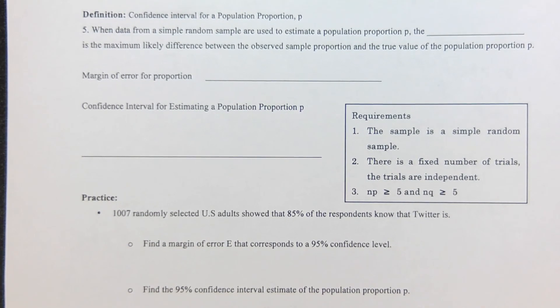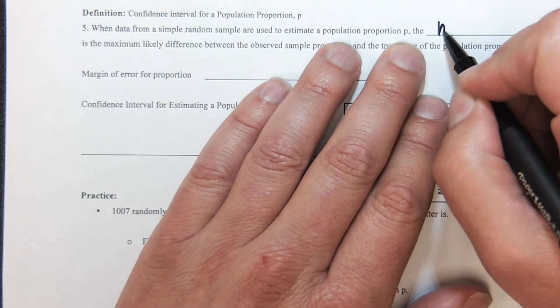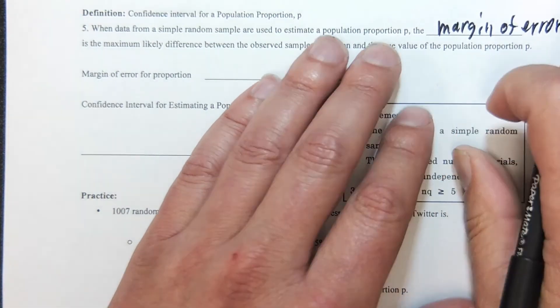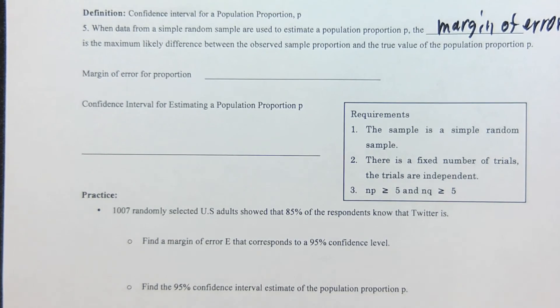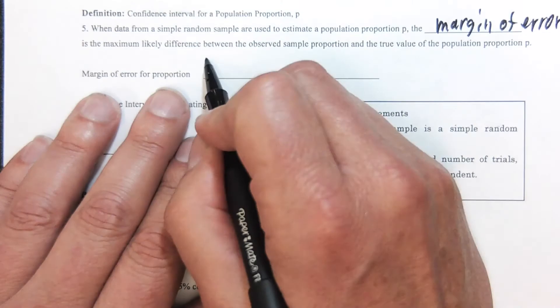Next, definition. Here we have our confidence interval and what we're going to be looking for is our margin of error. When data from a simple random sample are used to estimate a population proportion p, the margin of error, denoted with the letter E, is the maximum likely difference between the observed sample proportion and the true value of the proportion p.